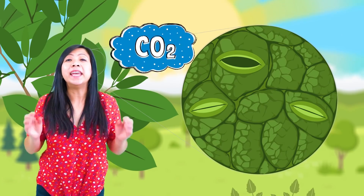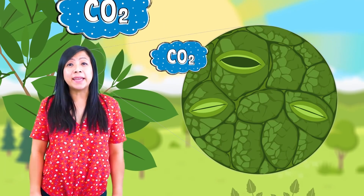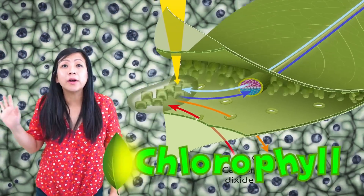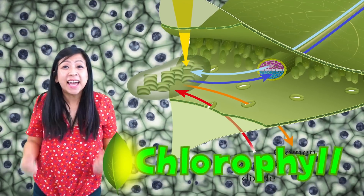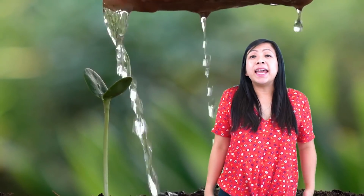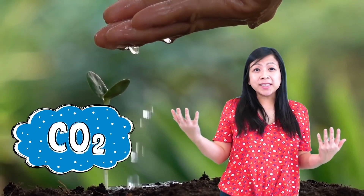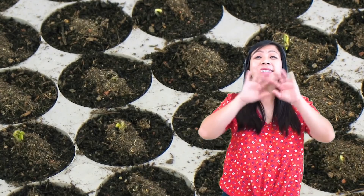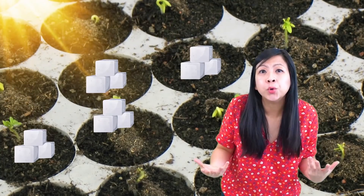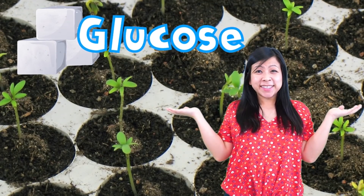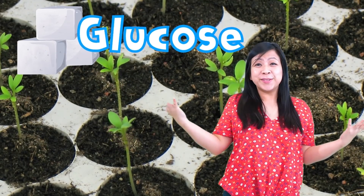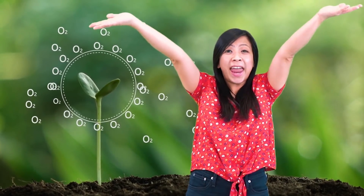The carbon dioxide enters the leaves of the plants through the stomata. Plants have molecules called chlorophyll, and the chlorophyll is what absorbs the sunlight. So plants take in water, carbon dioxide, and use sunlight to make their own food — a sugar called glucose. And don't forget, it releases oxygen into the air.